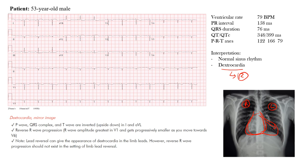In this patient, the rate is normal — between 60 and 100. We have a normal PR interval, normal QRS duration, and the QT and QTc intervals are normal. Notice that the R axis or ventricular axis is 166 — so if you draw out the axis chart, this would be positive 166.